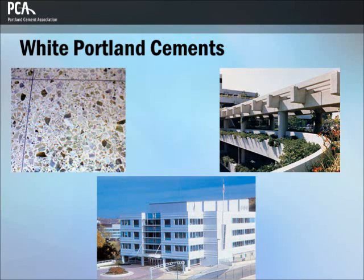White Portland cement is made to conform to the specifications of ASTM C150, usually Type 1 or Type 3. White Portland cement is used primarily for architectural purposes in structural walls, precast and glass fiber reinforced concrete facing panels, terrazzo surfaces, stucco, cement paint, tile grout, and decorative concrete.